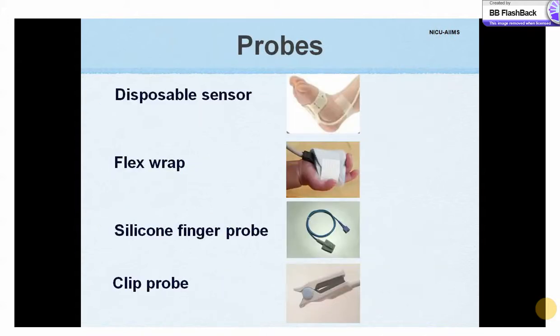There are different types of probes available. Disposable probes are available though expensive. Flex probes ensure good fixation and safety in neonates, with a life of 6 months. Finger probes are sturdy and last at least 1–2 years. Clip probes can be applied over a finger but are difficult to use in neonates.